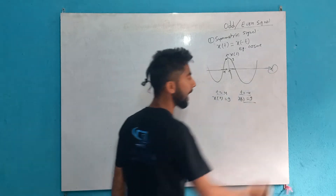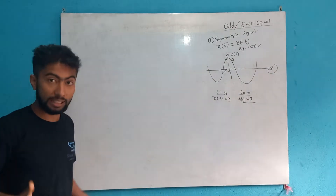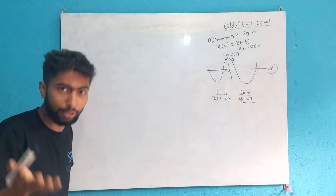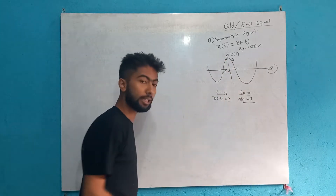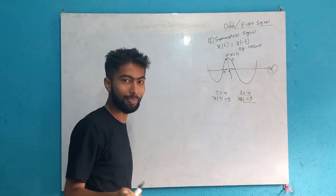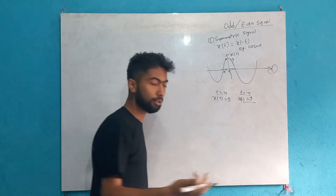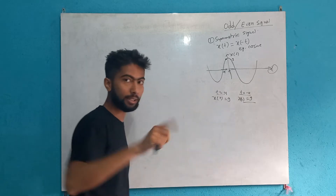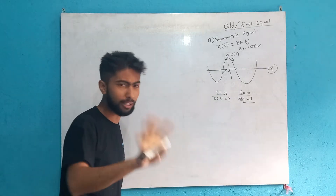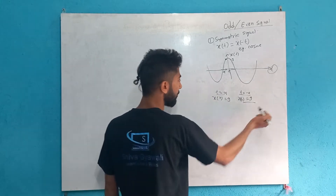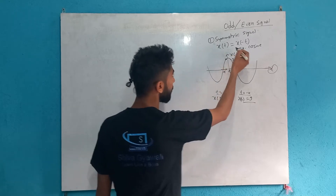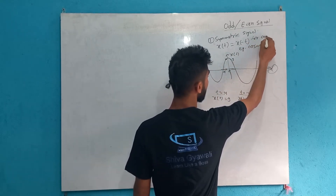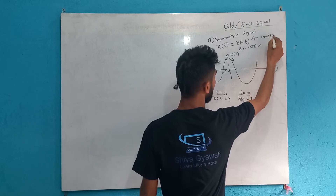When we denote the time as t, those are the continuous time signals, as you know. For discrete time, t is replaced by n, and the continuous diagram becomes discrete. So this is for continuous time signals.